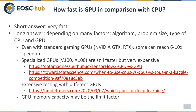If you use specialized GPUs from NVIDIA like the V100 or A100, it's even faster, but these GPUs are very expensive — 10,000 euros or more. You can see some benchmarks comparing GPU and CPU performance with recommendations for which GPU is suitable for your application.